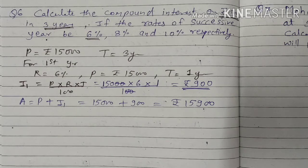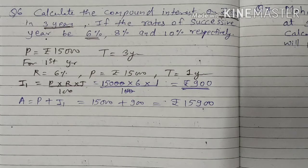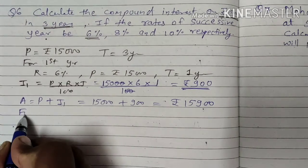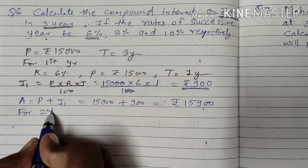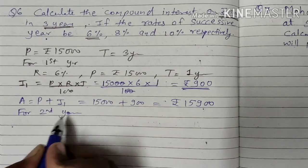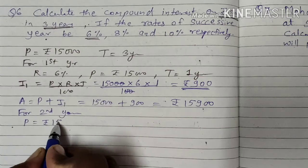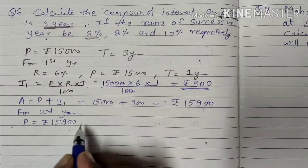Now, the amount of the first year will become the principal for the second year. The amount of the first year will become the principal for the second year. Let us make a calculation for the second year. The principal is Rs. 15,900.